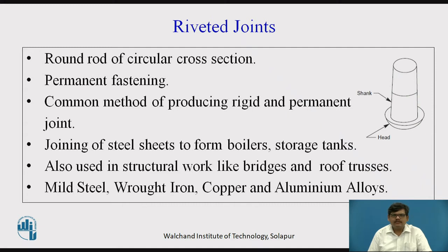Riveted joints are also used in structural work like bridges and roof trusses. On the screen you can see the image of a rivet where the lower part is called the head, which will be seen once the riveting has been completed, and the upper part is called the shank. So a rivet can be divided into two parts: head and shank.